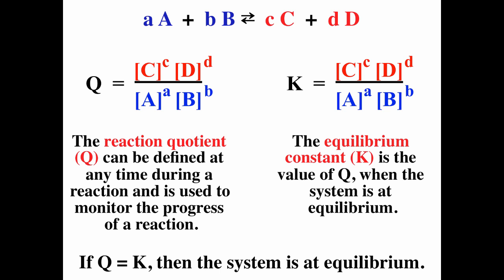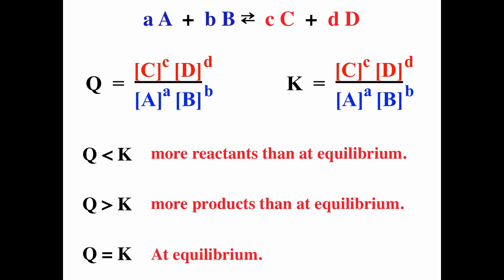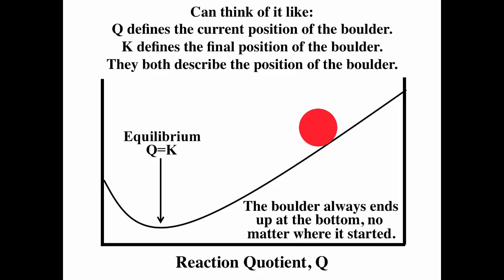At equilibrium, Q equals K. If you start with all reactants, Q is less than K initially. If you start with all products, Q is greater than K initially. If Q is less than K, you have more reactants than at equilibrium; if Q is greater than K, you have more products than at equilibrium. Think of it like a boulder: Q measures the boulder's position as it's moving, K measures the final position, and the boulder always ends up at the bottom.